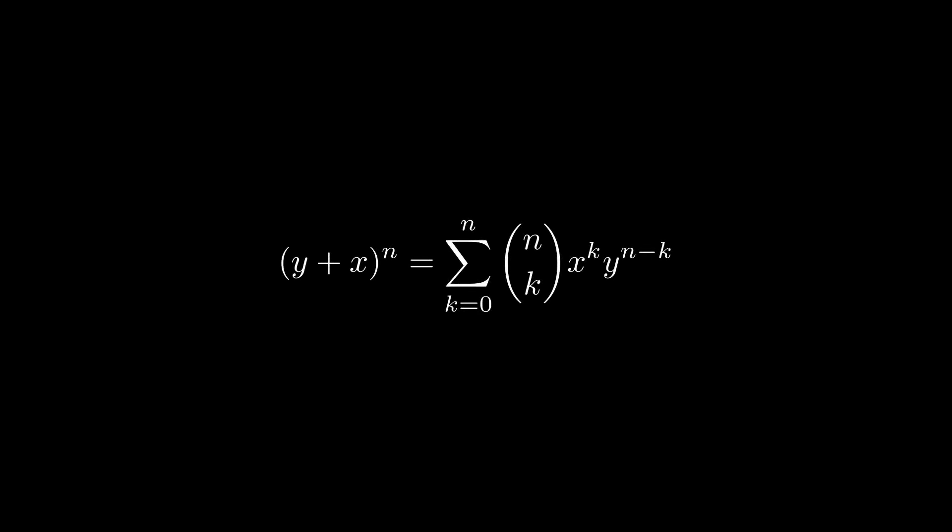Now for our second claim, that the sequence is monotonically increasing. For this part of the proof, we're going to apply the binomial theorem. When y equals 1, the formula simplifies to this. A full explanation of this formula is outside the scope of this video, so we'll leave a link in the description with more information.